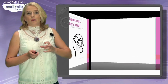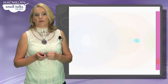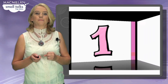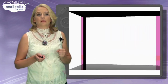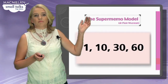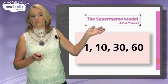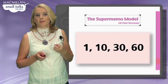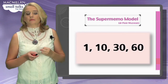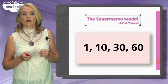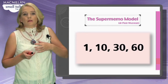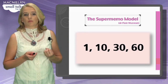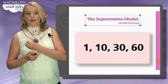So step one — this is actually a very, very important thing. Have a look at these numbers: 1, 10, 30, and 60. Think about what these numbers mean. If you think about how we remember language and how quickly we forget it, these numbers stand for days — 1 day, 10 days, 30 days, and 60 days.